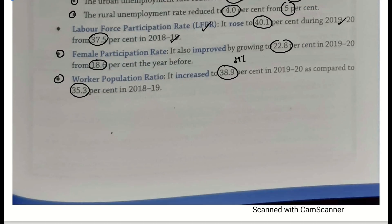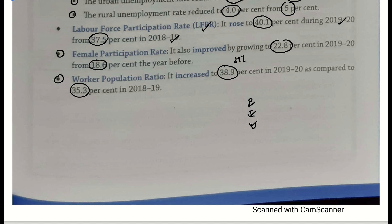Hamara toh dosto, 3rd pillar bhi jo hai is chapter ka, jiska naam tha: Poverty, Inequality and Unemployment — khatam ho gaye hain. Toh iske baad hamare kuch reh gaye hain aur fringe areas ke ek do topic aur reh gaye hain, chapter bhi khatam nahi hua hai. Usse hum dekhenge — kuch-kuch baatein hamari karna baaki reh gayi hain regarding occupation status, occupation structure in India.